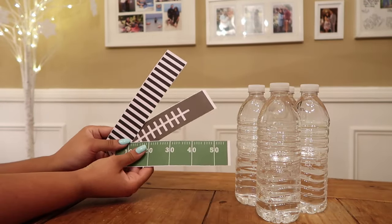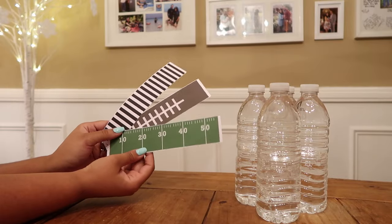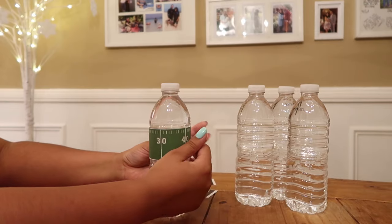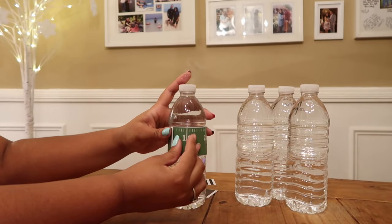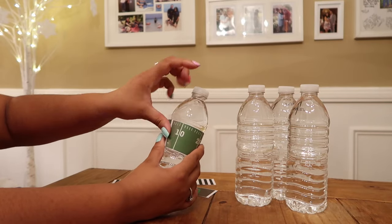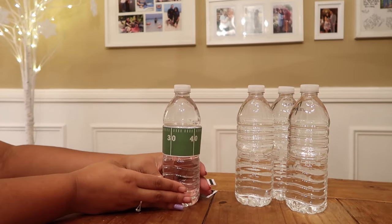So once you cut out your sleeves we're going to go ahead and start wrapping our water bottle. Grab a piece of tape and attach them together and just like that you have a super cute sleeve for your football party.